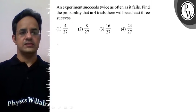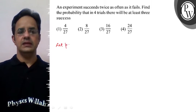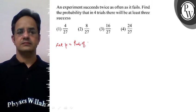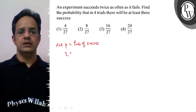So let p be the probability of success and q be the probability of failure.